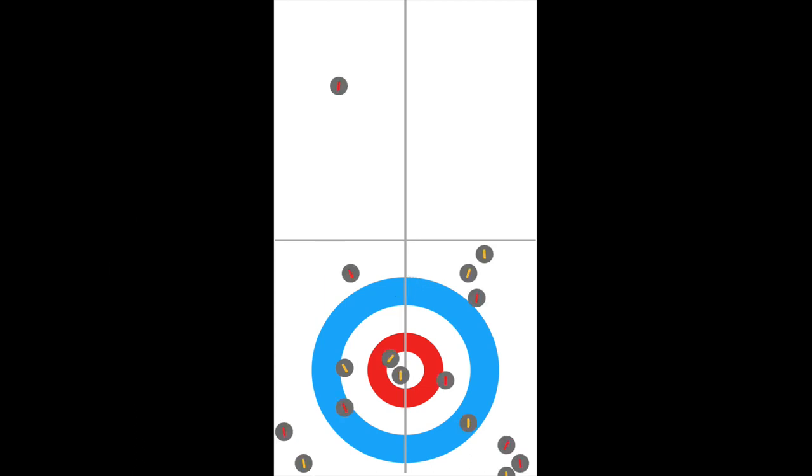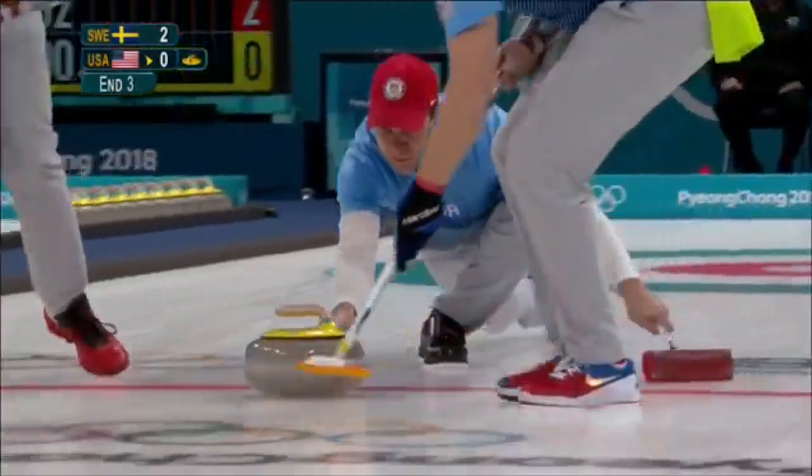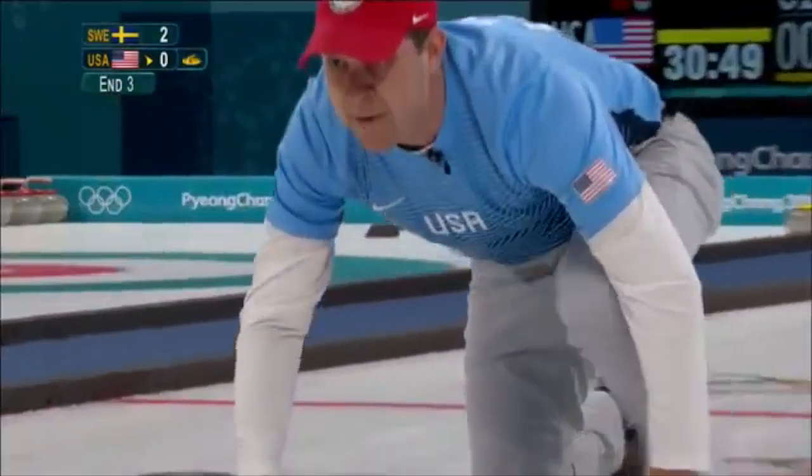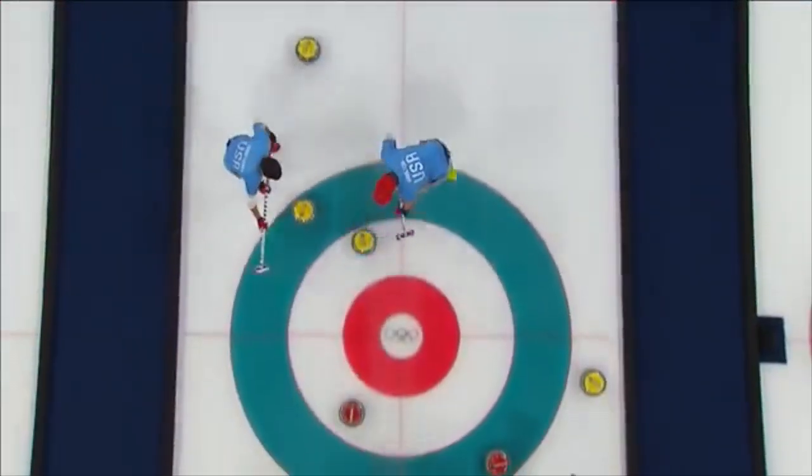If this is the end of one end, then you'll find that yellow wins the round because their rock is in the button. But there are two yellow rocks closer to the button than the closest red rock, so the yellow team would score two points in the first end. Here's a great example of Team USA knocking two of Sweden's rocks out of the house in the 2018 Olympic gold medal match.